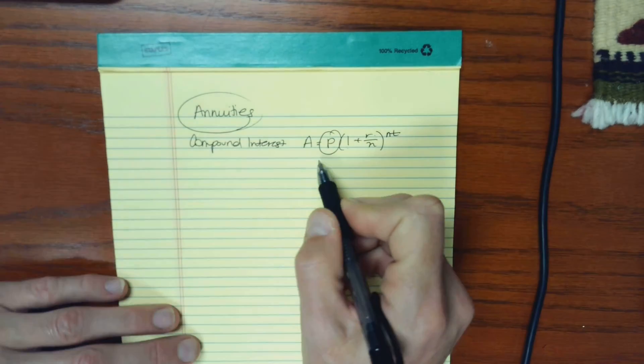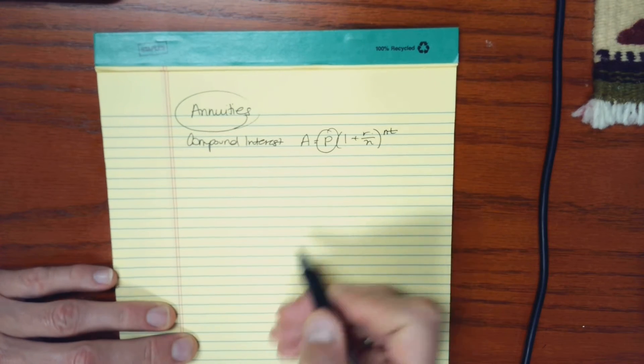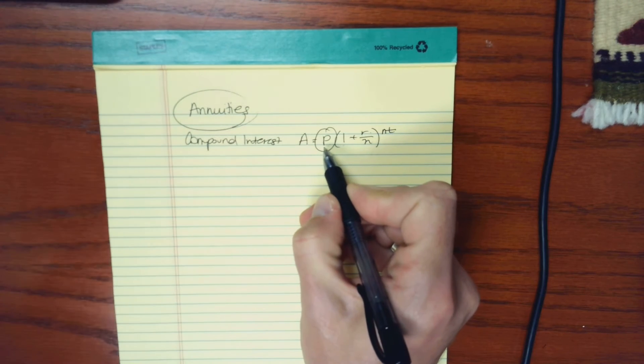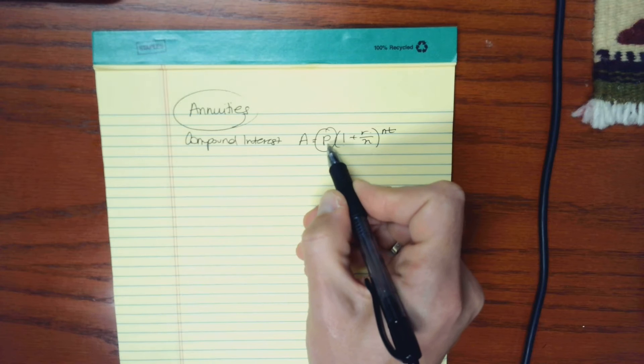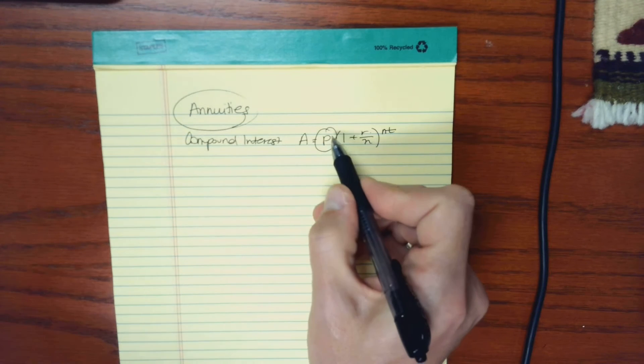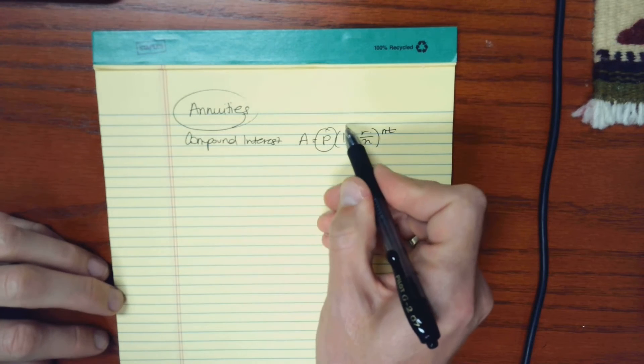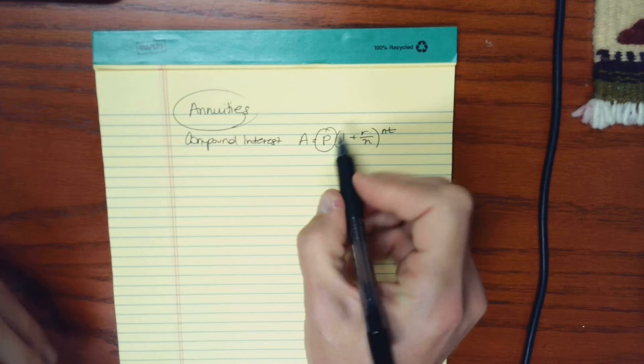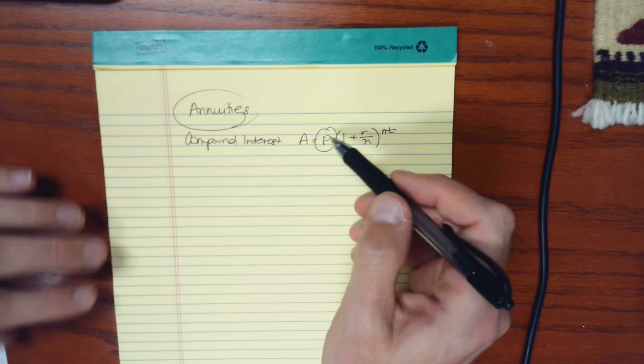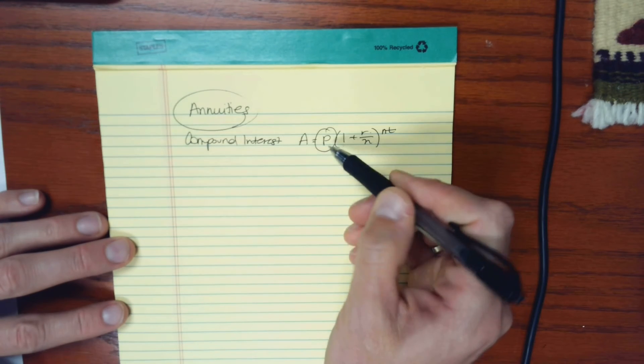So in this case, in this video and in these formulas, when we see a P, it's not a lump sum principle. You can think of the P as being a periodic payment or the amount that you would set aside periodically or add to your savings account, the amount that you would have withheld from your paycheck or automatically sent to a savings account.